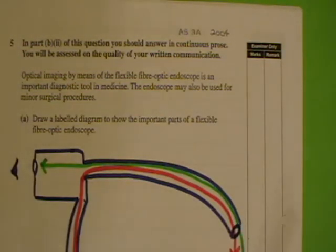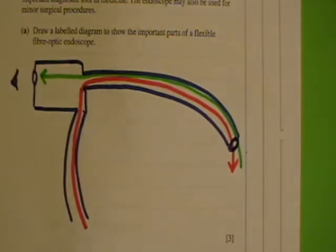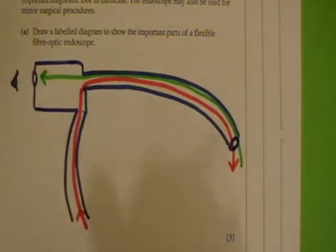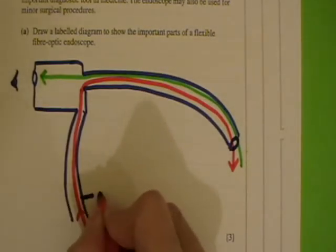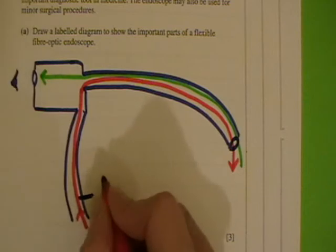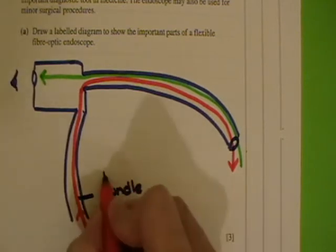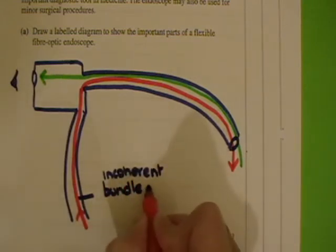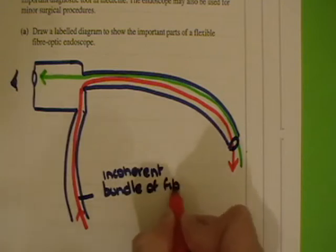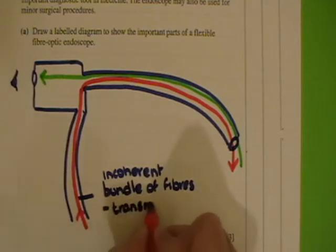You can also put in other tubes in there, but what you need to do is label those parts. This here is a bundle — and it's an incoherent bundle, which we'll explain in a minute — of fibers. And so this transmits light into the body. Make sure you label anything you draw.